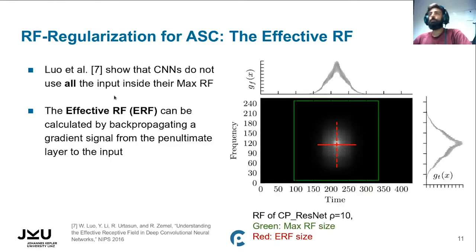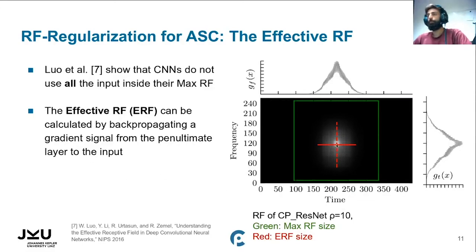What we talked about so far is the maximum Receptive Field. However, it has been shown that CNNs do not use all the input inside their maximum Receptive Field — they actually focus on the central part, which is called the Effective Receptive Field (ERF). You can calculate this ERF by back-propagating a gradient signal from the penultimate layer back to the input spectrograms, shown here in white. The real effective Receptive Field is shown in red, while the maximum Receptive Field is shown in green.